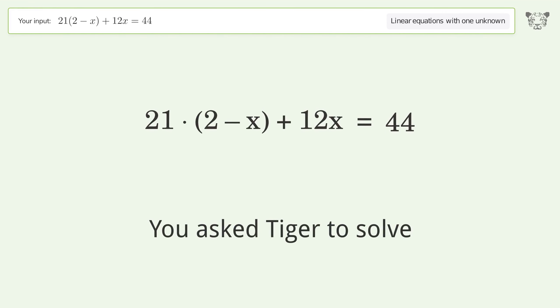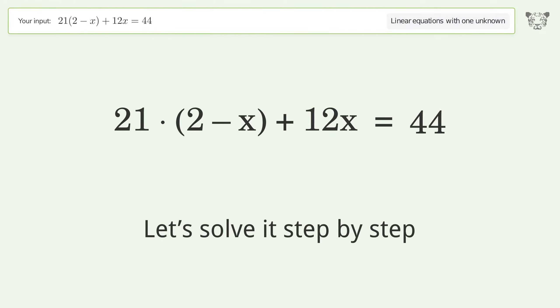You asked Tiger to solve this. This deals with linear equations with one unknown. The final result is x equals negative 2 over 9. Let's solve it step by step.